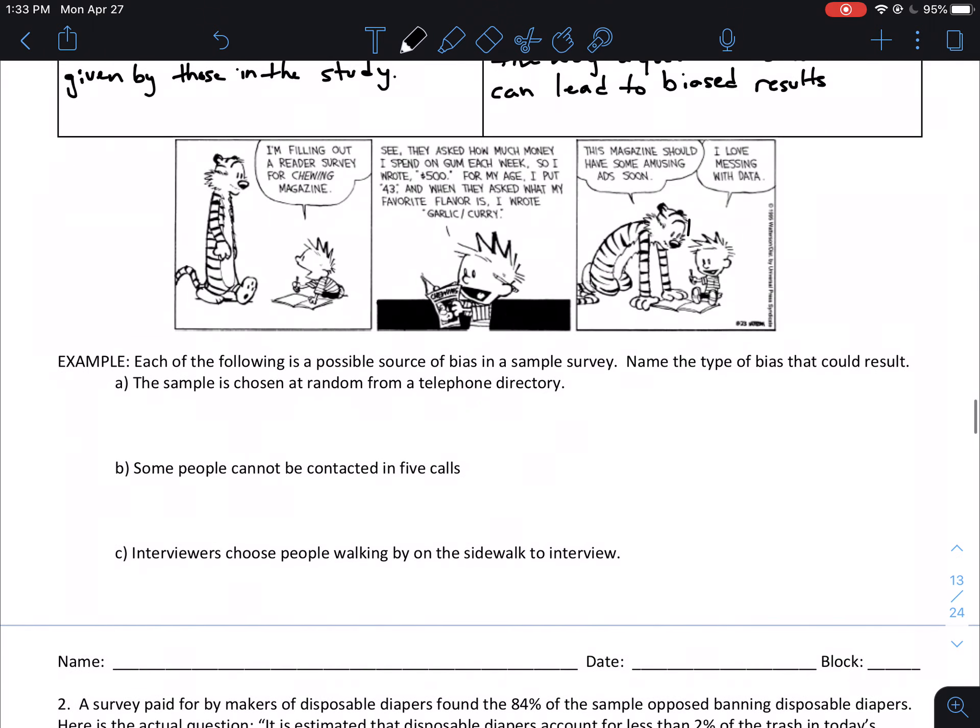Okay. So let's take a look at each of these possible sources of bias in a sample survey. We're going to name the type of bias that could result. So example A, the sample is chosen at random from a telephone directory. So if you think about a telephone directory, not very many people are going to have their telephones in the directory. I would see this as being under coverage.